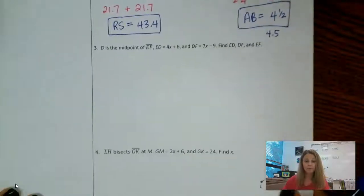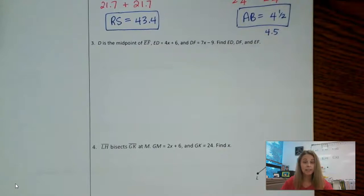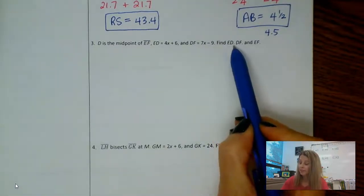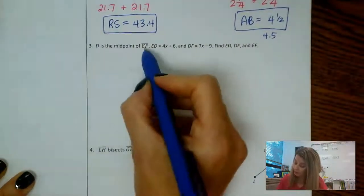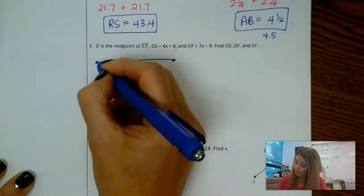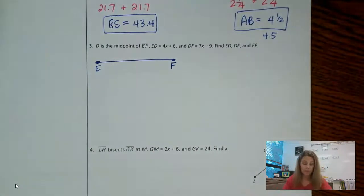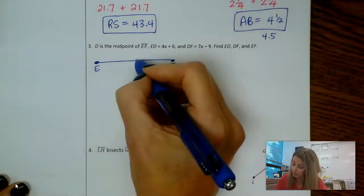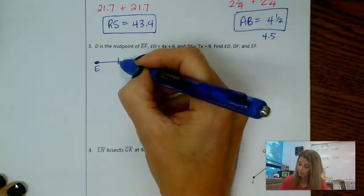Number three says D is the midpoint of segment EF. ED is 4X plus 6. DF is 7X minus 9. Find the length of ED, DF, and EF. All right, I need a picture. So draw segment EF. And then I need the midpoint, so I'm going to put D where it looks approximately the middle. But to remind myself that that's the midpoint, I'm going to add these tick marks.